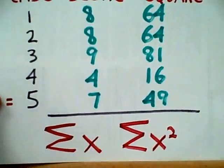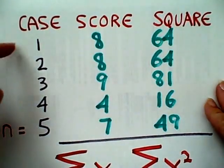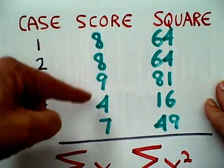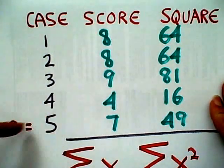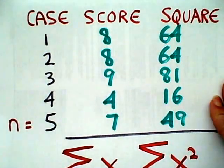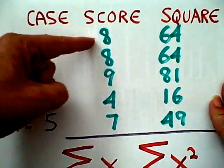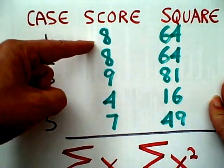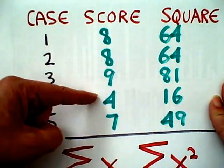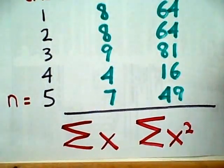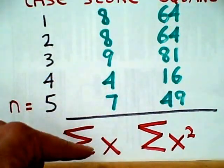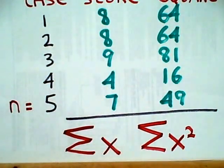Let's take a data set. We're going to look at the case, the score, and the square of that score. We have five cases, so our N is 5. We've got that already. Now, we're going to look at the individual scores: 8, 8, 9, 4, 7. Notice that they don't have to be in any particular order, ascending or descending, and if we added all those up, that would be the sum of all the scores.